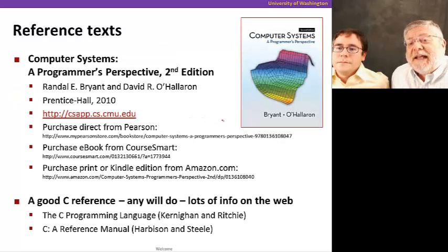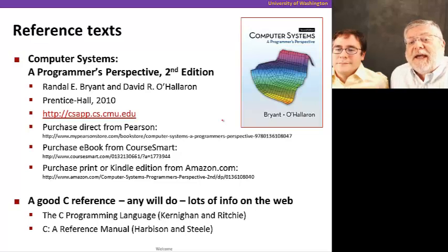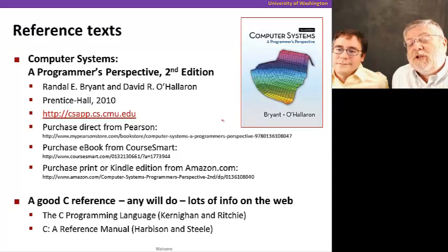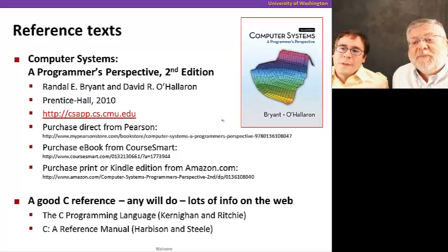About those reference texts — again, these are purely recommended, not required by any means, but you might find them helpful. The first is the computer systems text by Bryant and O'Halloran. This is a great book; the second edition came out just a few years ago, and you can get it from lots of different places. The book also has an extensive website at CMU. We'd also like you to have a reference for the C programming language, which we'll be using in this class. There are lots of options — we have a few recommendations on this slide, but really anything will do, and there's lots of info available on the web if you don't want to purchase a text.